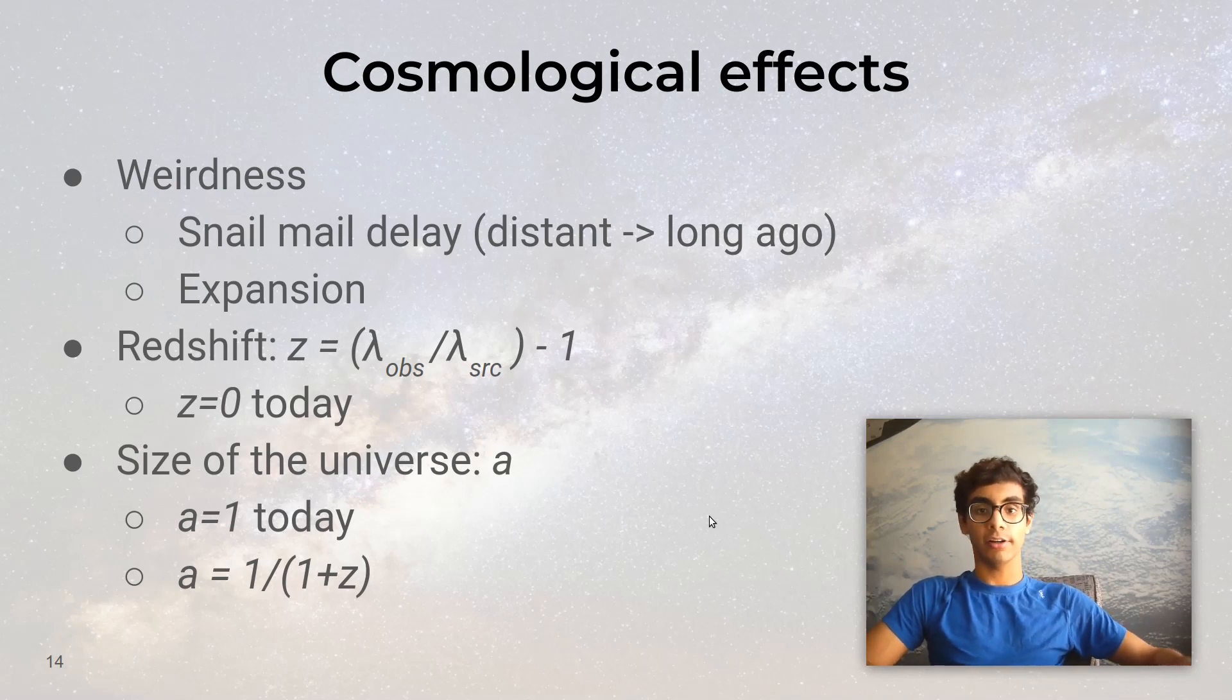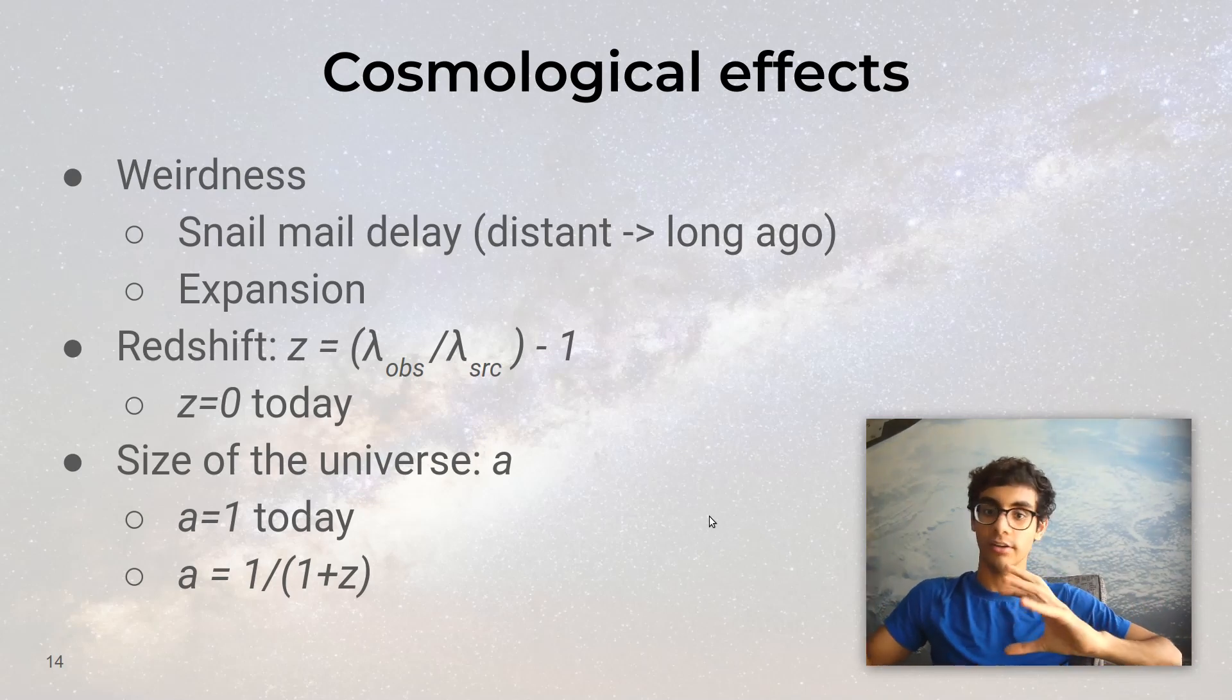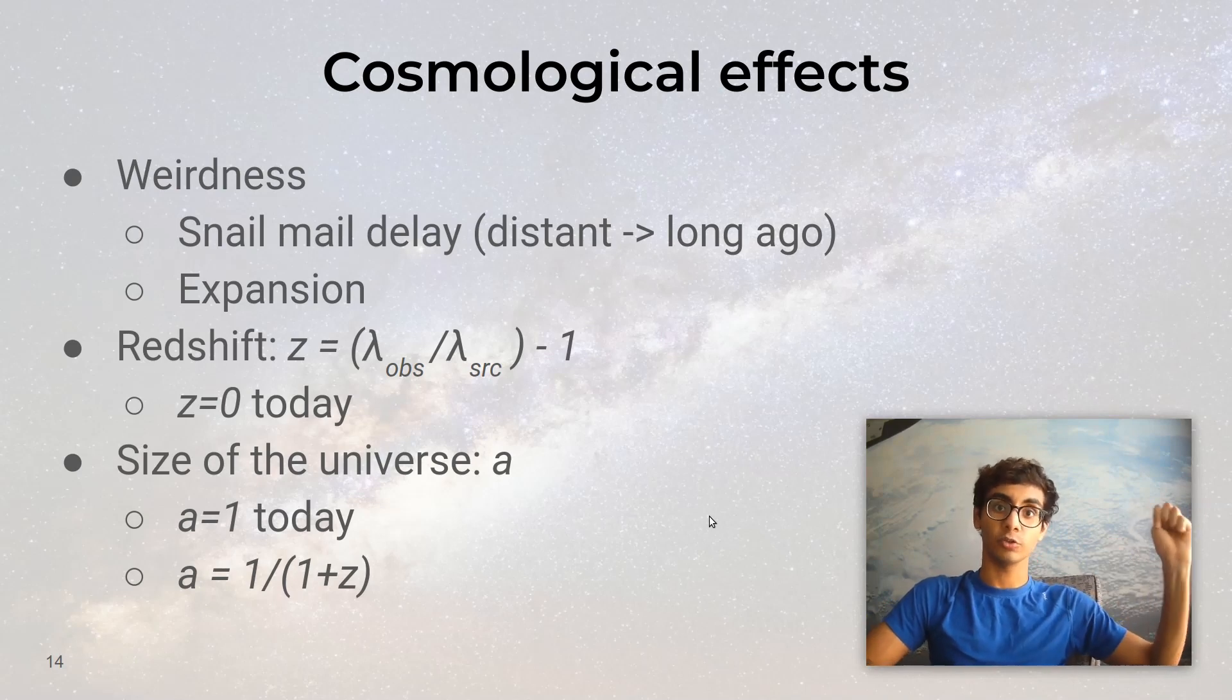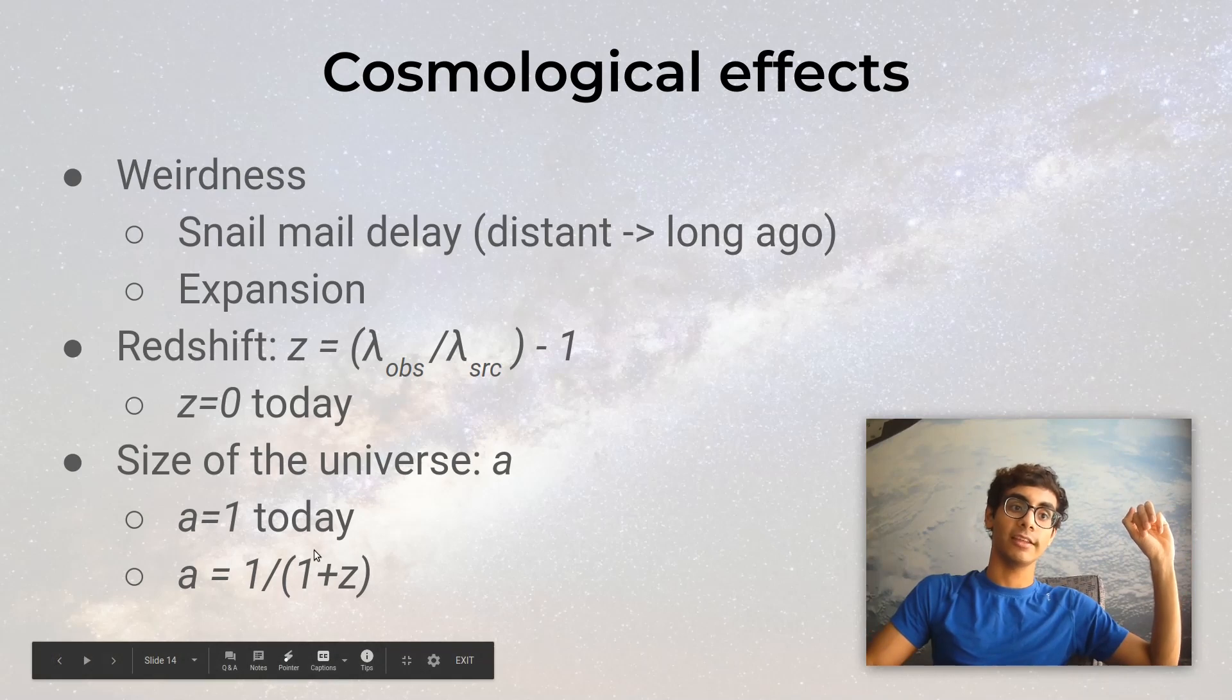The expansion of the universe is basically measured by how fast the scale factor changes over time. As I mentioned earlier, it's intimately related to redshift. If we know how much cosmological redshift has occurred for a given very distant object, then we can calculate the scale factor of the universe when the light was first emitted. That's the equation right here that relates scale factor to redshift.